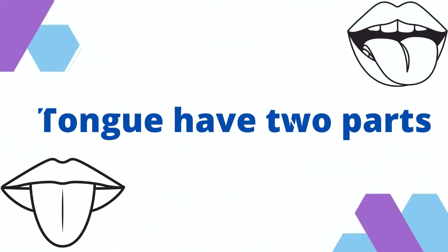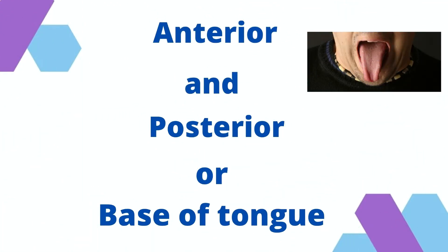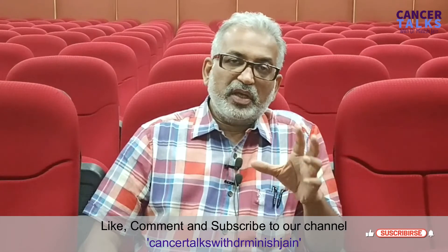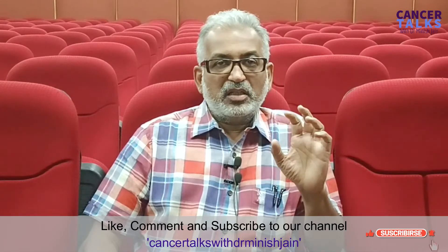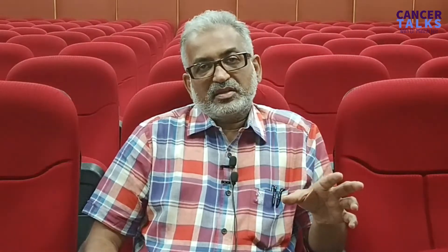Carcinoma of the tongue, what we call tongue cancer — the tongue has two parts: the anterior part which we see protruding out, and the part which is fixed in our throat in the pharynx, called the posterior part or base of tongue. These are the two areas — two-thirds and one-third. If you look at the breakdown of cancer, the lateral tongue comprises the maximum, at 47 percent. The posterior tongue comprises 20 percent, and the tip comprises 15 percent, plus there are some cancers in the frenulum and other areas.